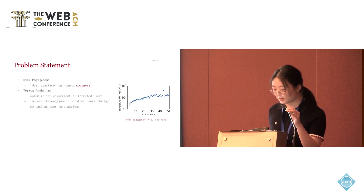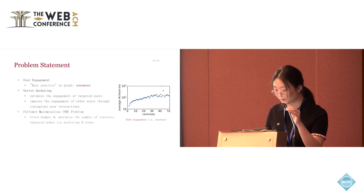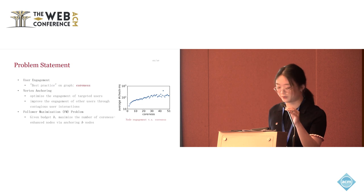Vertex anchoring is a common practice in recent studies to optimize the engagement of targeted users by providing incentives and improve the engagement of other users through contagious user interactions. So based on this, our problem is given budget B to maximize the number of coreness-enhanced nodes via anchoring B nodes, which we call the follower maximization problem, also FM problem.